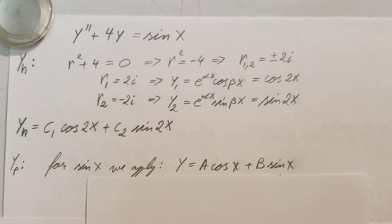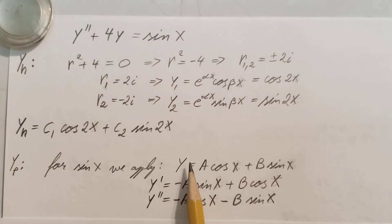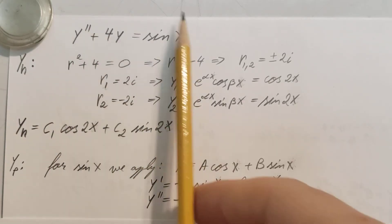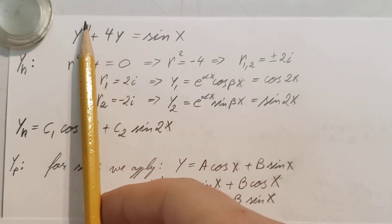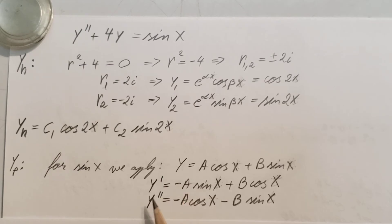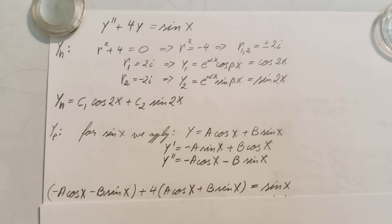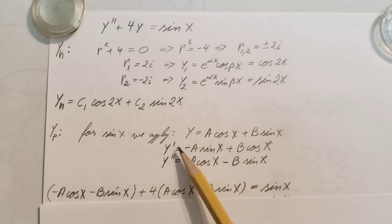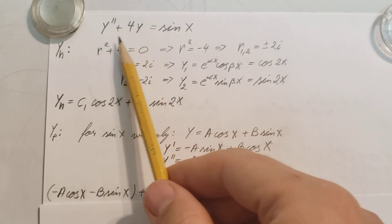Now I'm gonna go ahead and take some derivatives since our equation here goes up to the second power. So we're gonna take two derivatives so we can have y to the second power: y, y', y''. Now that we have these three, we're gonna come back to our original equation.